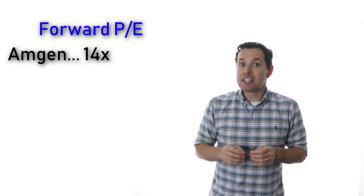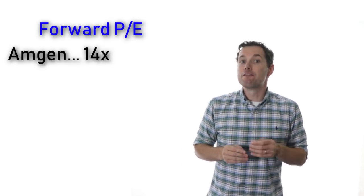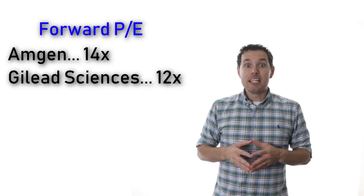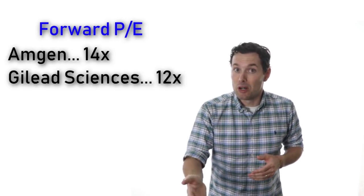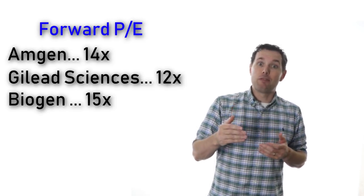So I've looked at some competitors to try to gauge what the fair value of Celgene could be, and it seems common for analysts to be using a PE multiple to value these types of stocks. Well, Amgen is currently trading at a forward PE of 14x, Gilead is currently trading at a forward PE of 12x, and Biogen is trading at a forward PE of 15x.